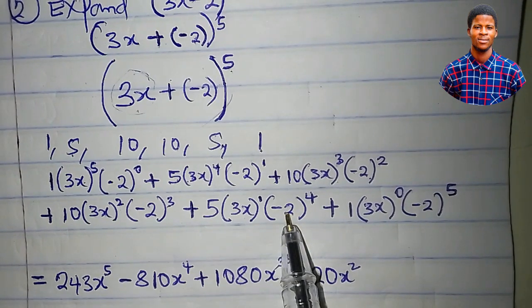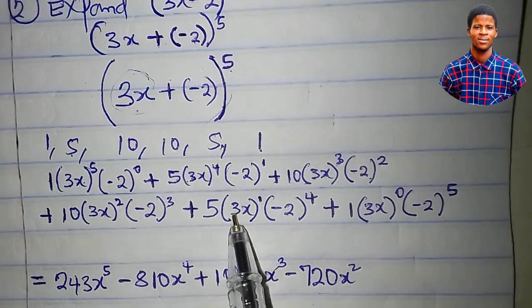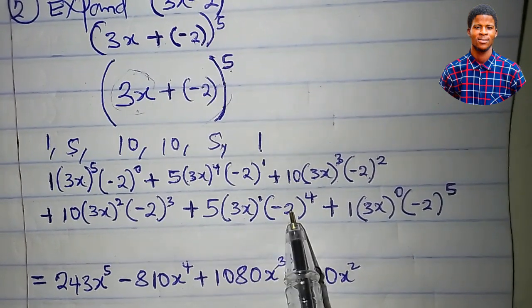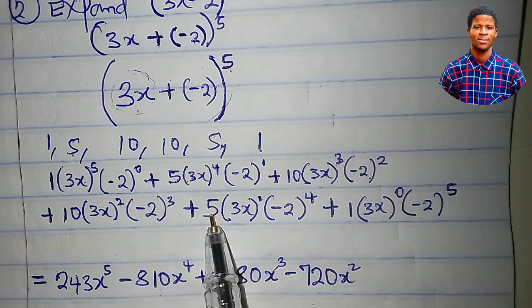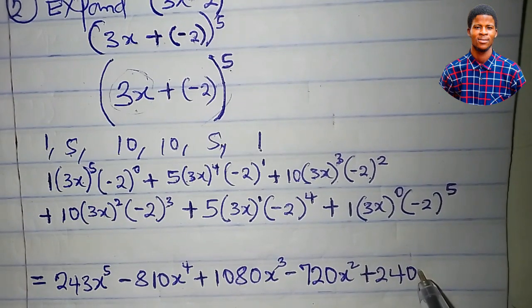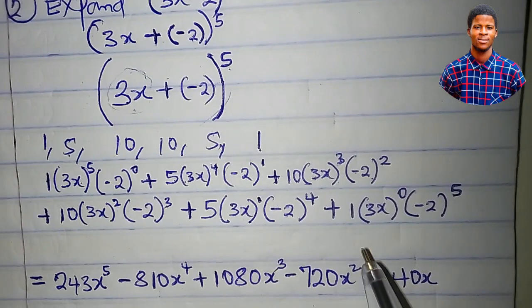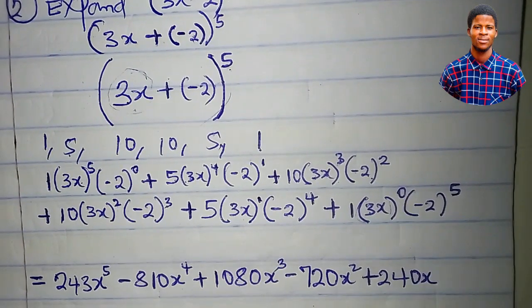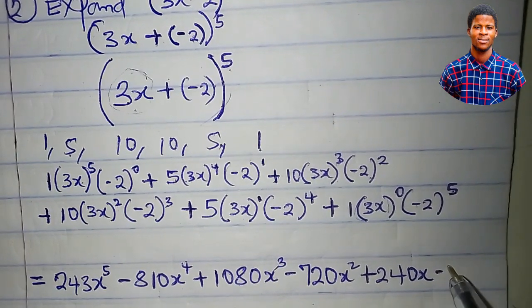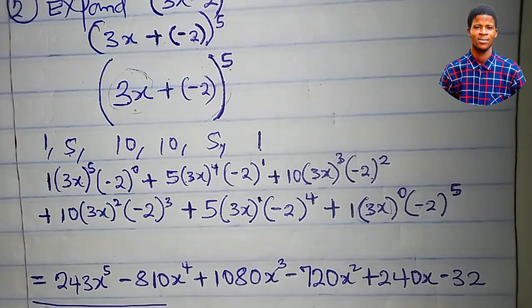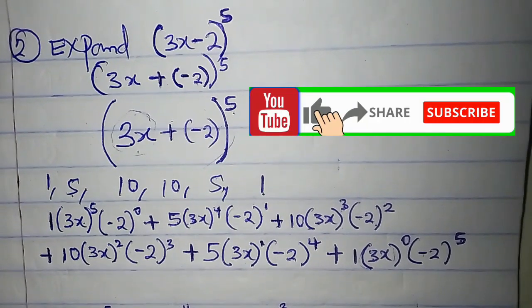Minus 2 to the power of 4 is positive 16; 3 to the power of 1 is 3; 3 times 16 is 48; 48 times 5 is 240, giving 240x. Then 3x all raised to the power of 0 is 1, and minus 2 to the power of 5 gives minus 32. So this is the expansion of 3x minus 2 all to the power of 5.